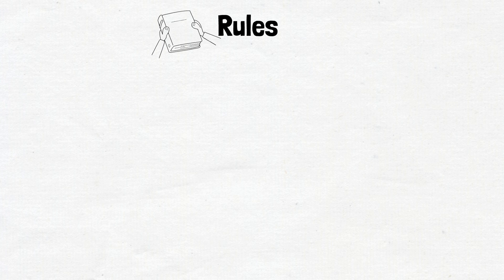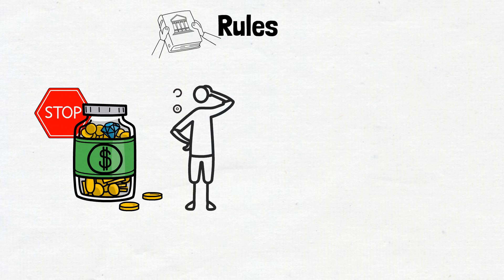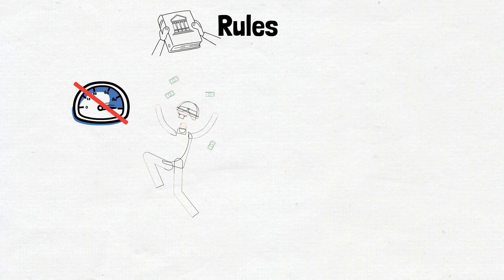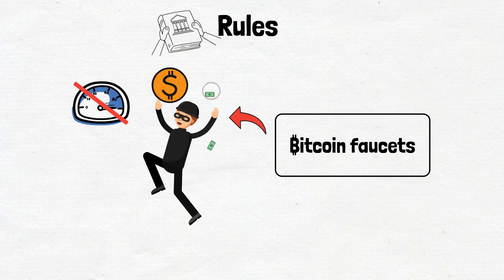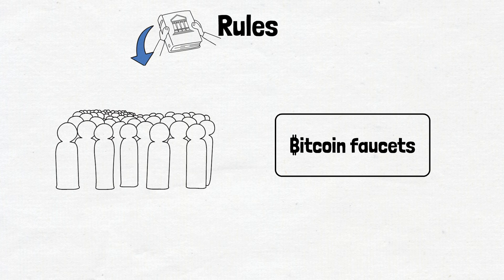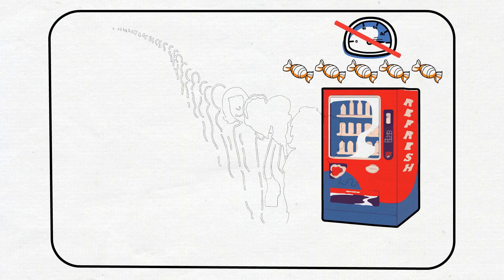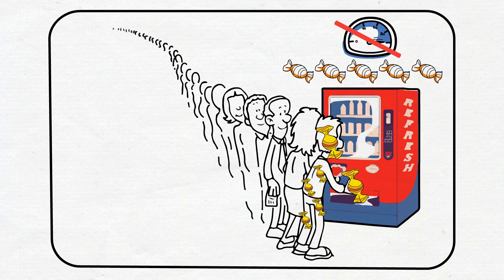Now, let's talk a bit more about the rules these faucets apply to limit your daily earning potential. Why do they do that? Well, it's all about fairness and keeping things smooth. See, if there were no limits, some folks might try to game the system by claiming Bitcoin non-stop. These limits help ensure that everyone gets a fair chance to collect their share of satoshis. After all, if the vending machine gave free samples of candy without any limitation, no one would buy candy. People would just keep pressing the button until they could satisfy their cravings for sweets.